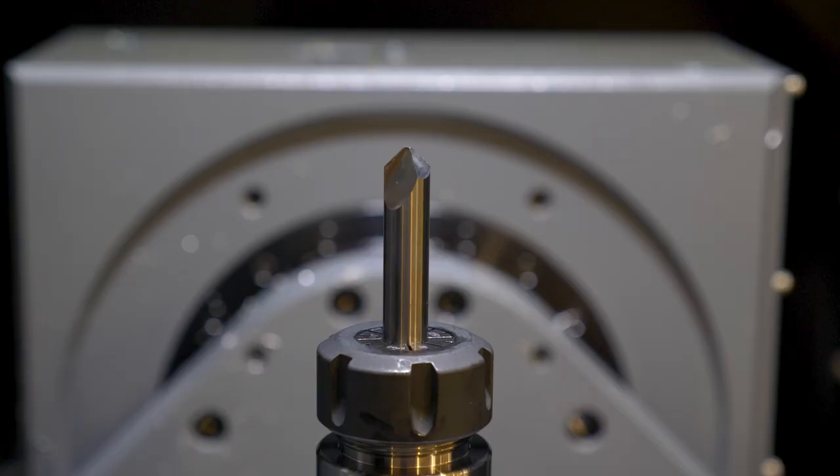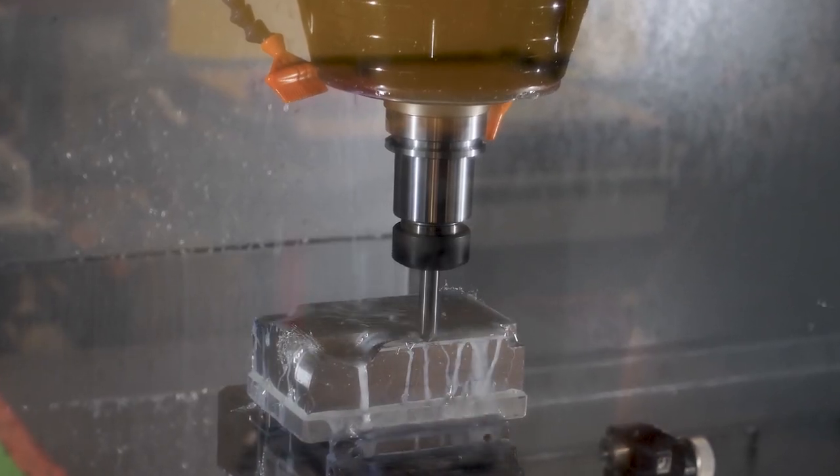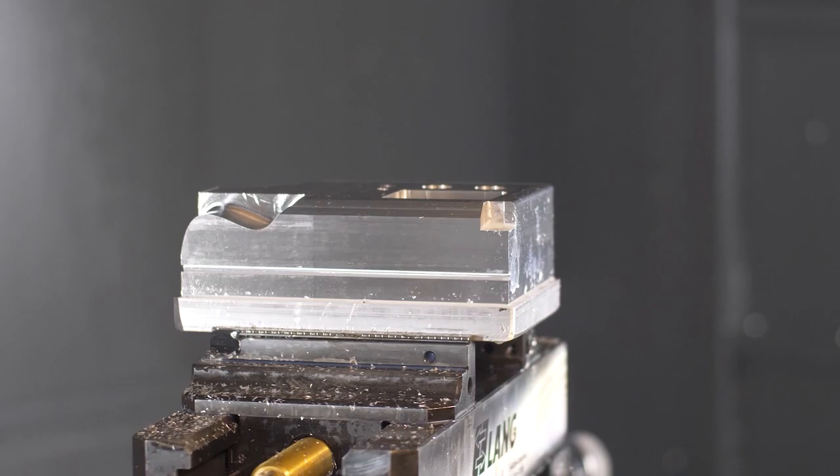Next up, we have edge tools such as chamfer mills and edge rounding cutting tools. These tools are specialty tools used to create edge breaks on parts called chamfers or edge radii.